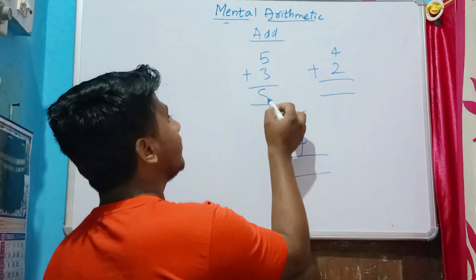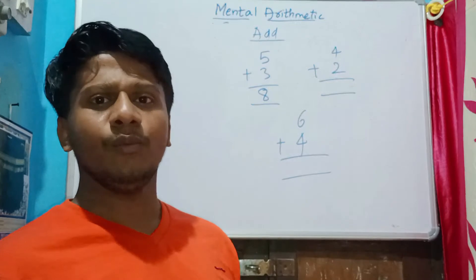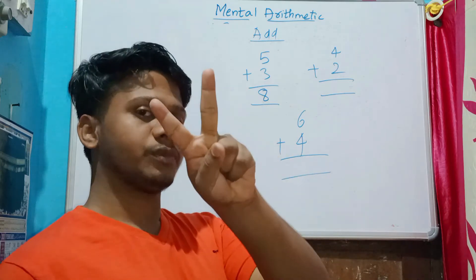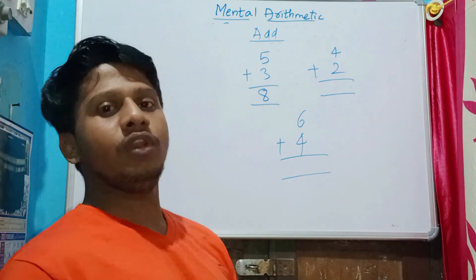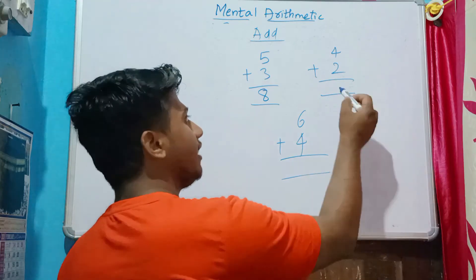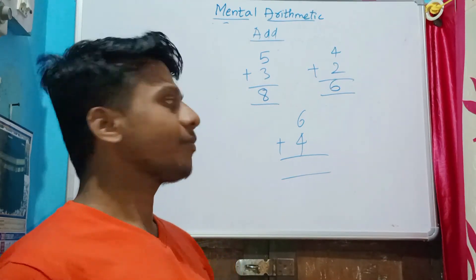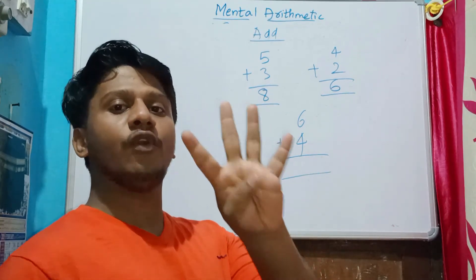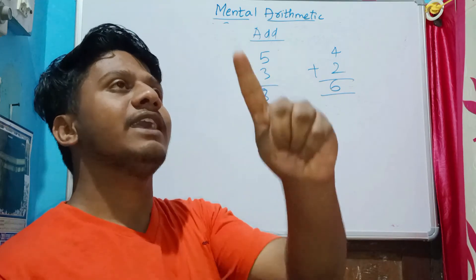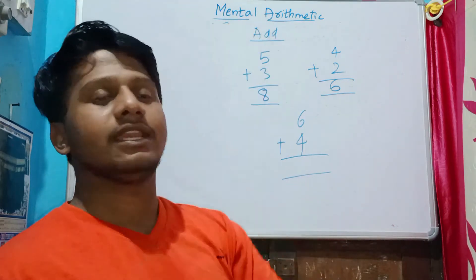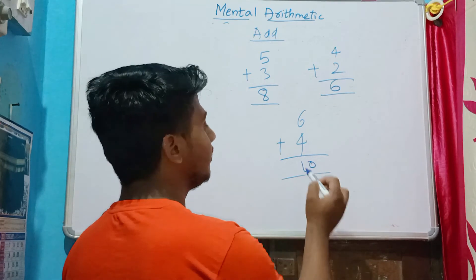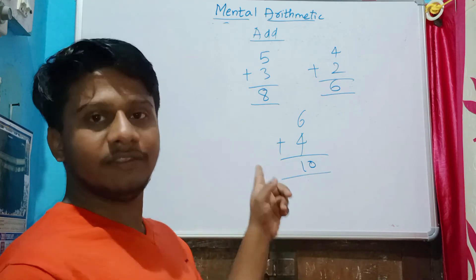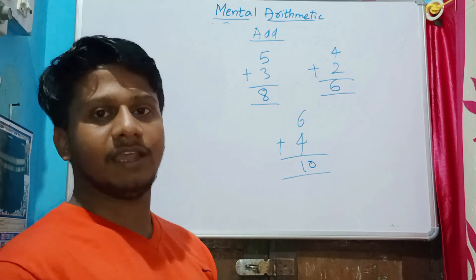Four plus two: after four, take two numbers — five, six — the answer is six. Six plus four: after six, take four numbers — seven, eight, nine, ten — the answer is ten. I've finished three problems; there are many more in the textbook, so please go and practice.